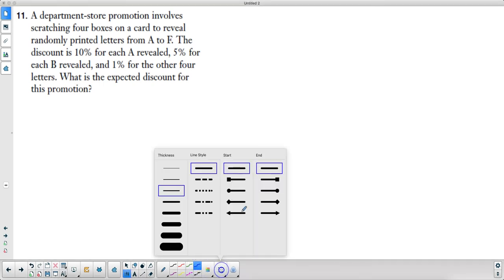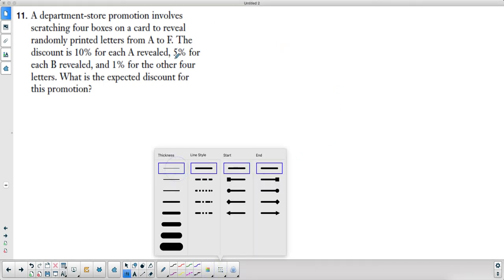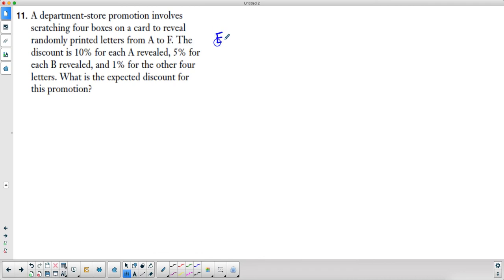Okay, so the expected discount - remember to get the expected value we have to multiply the probability by the value. So the value for the A's is 10%, and since the value for the A is 10, we're going to multiply that by the probability of getting an A, which is 1/6 because there's six letters and they're randomly distributed. So the chances of getting an A are 1/6 and the value of getting an A is 10.